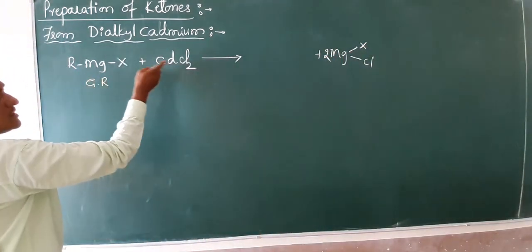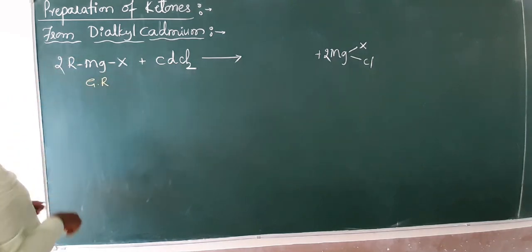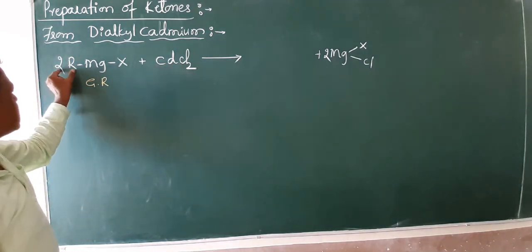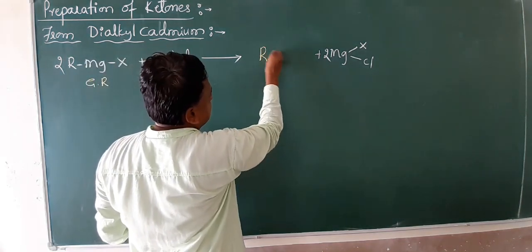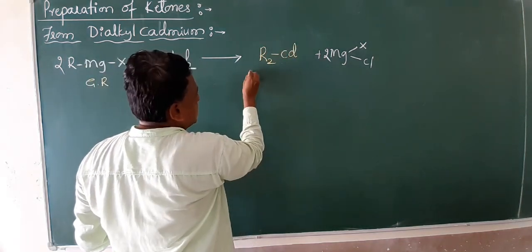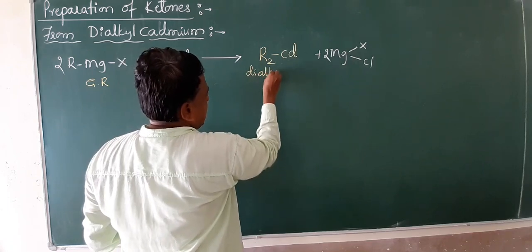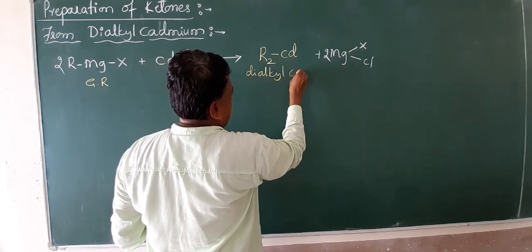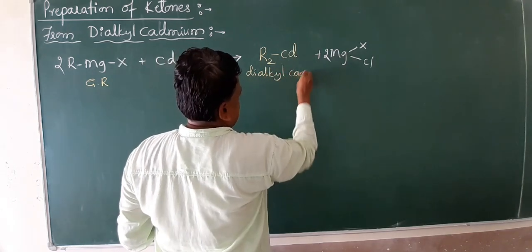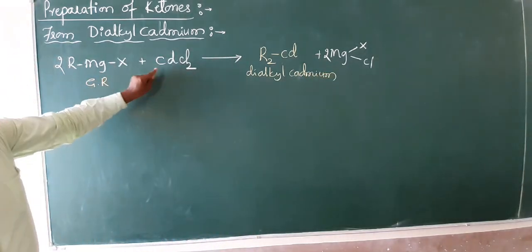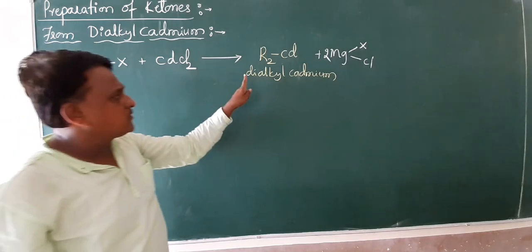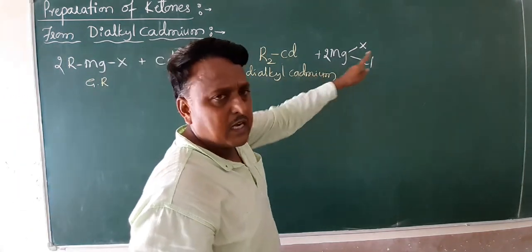This is Cl, we require 2 R. What remains is the 2-alkyl group with cadmium. The product is R2Cd. This R2Cd is called dialkyl cadmium. When Grignard reagent reacts with cadmium chloride to form dialkyl cadmium and magnesium salt.